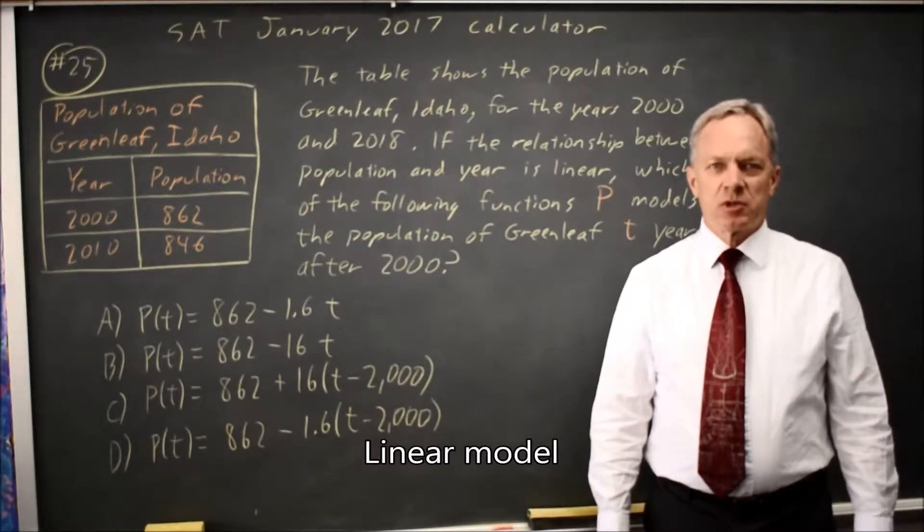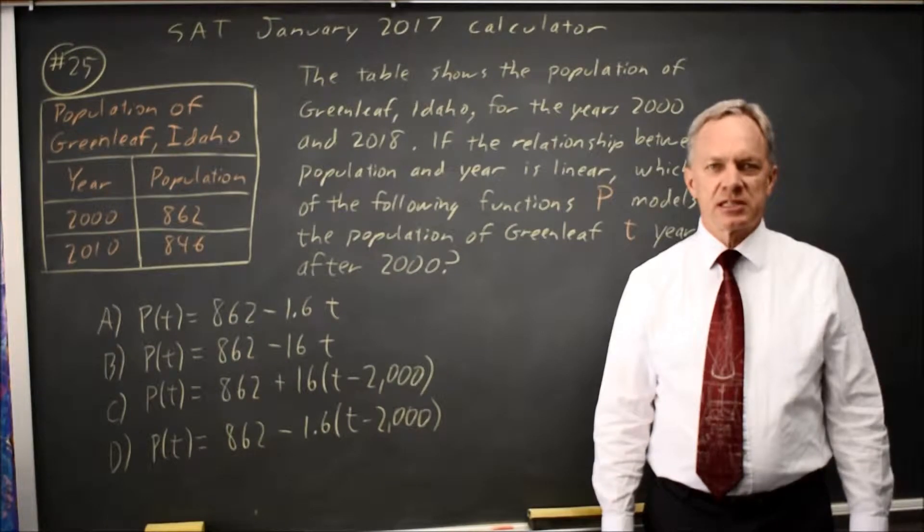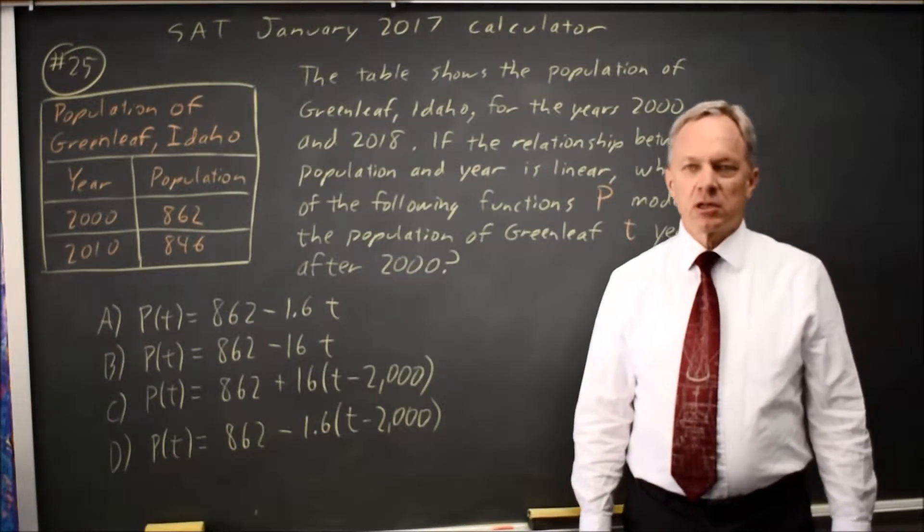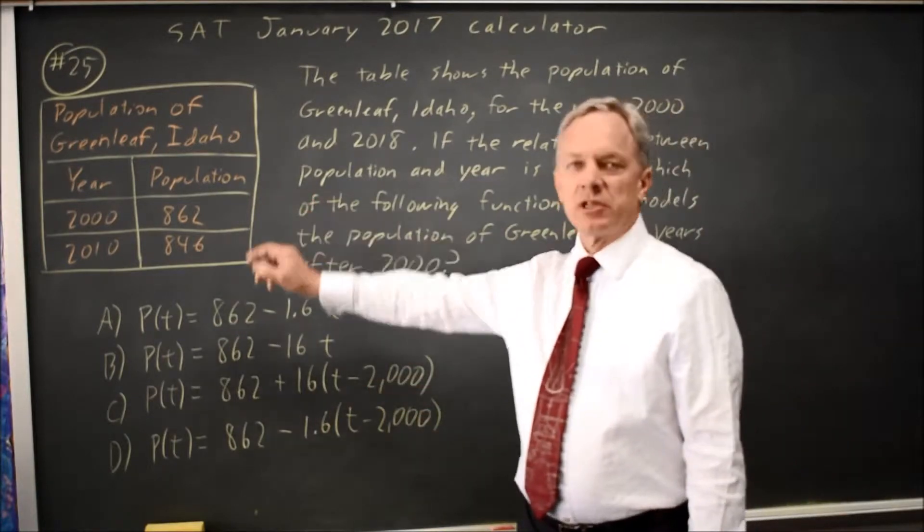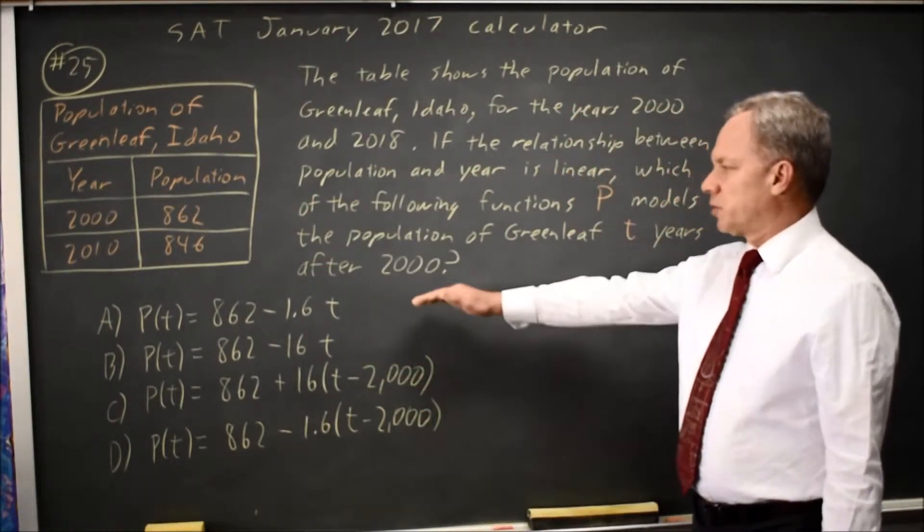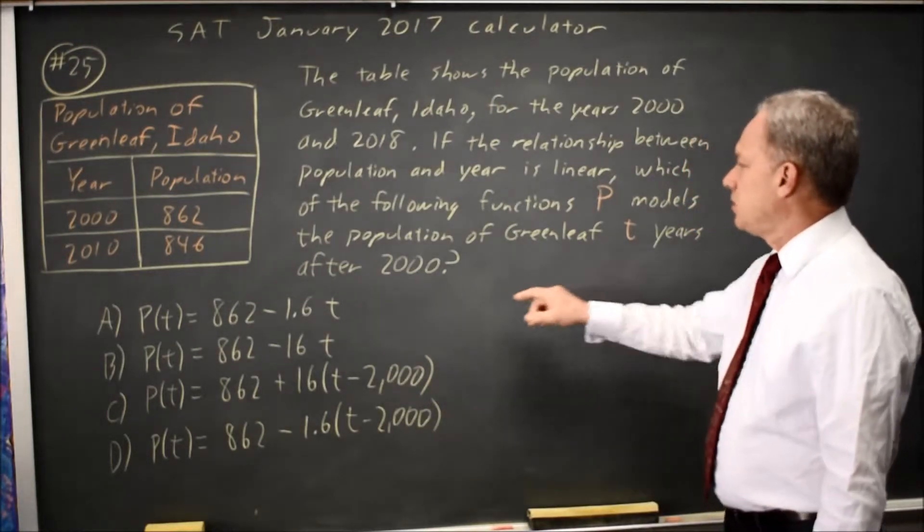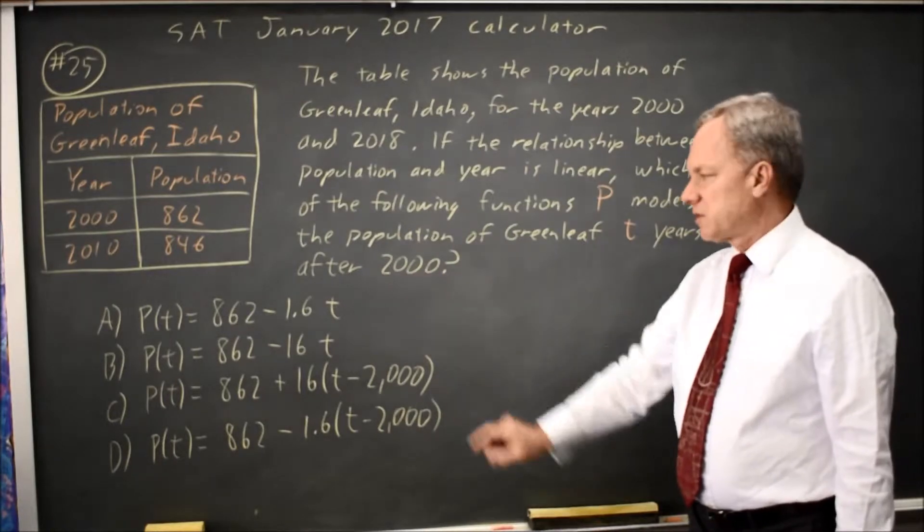This is calculator question number 25 from the January 2017 SAT, which is also practice test 8 on the 2018 College Board prep book. The College Board gives us the population of Greenleaf, Idaho in 2000 and 2010 and asks which equation models that population where T is years after the year 2000.